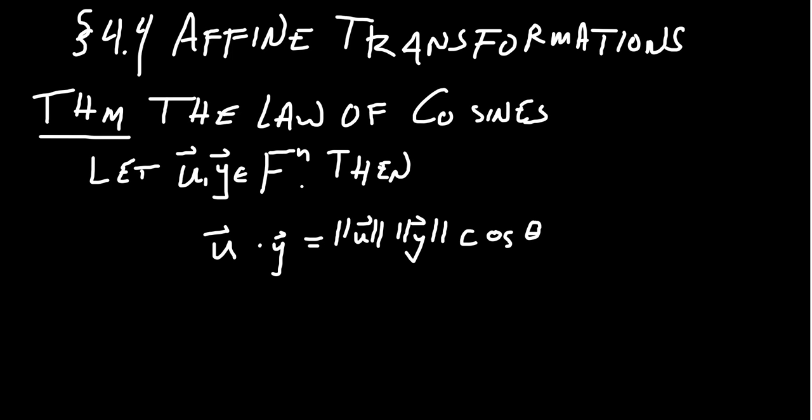We've talked in the past about linear transformations — those transformations preserve vector addition and scalar multiplication. Today we're going to talk about a generalization of the linear transformation known as an affine transformation. Before we do that, I want to make a connection to the inner products we've been talking about in the previous three lectures with angles and geometry, specifically the law of cosines in the context of vector algebra.